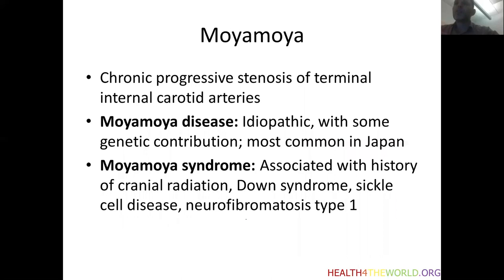Another important cause of arteriopathy in children is Moyamoya. Moyamoya refers to chronic progressive stenosis of the terminal internal carotid arteries. We divide it into two categories: Moyamoya disease, which is idiopathic — we don't know precisely what causes it, but there is some contribution of genetics. It occurs with different frequency in different populations — it's much more frequent in Japan than in the United States, and in the US it's more frequent in children of Asian ancestry than those of European ancestry.